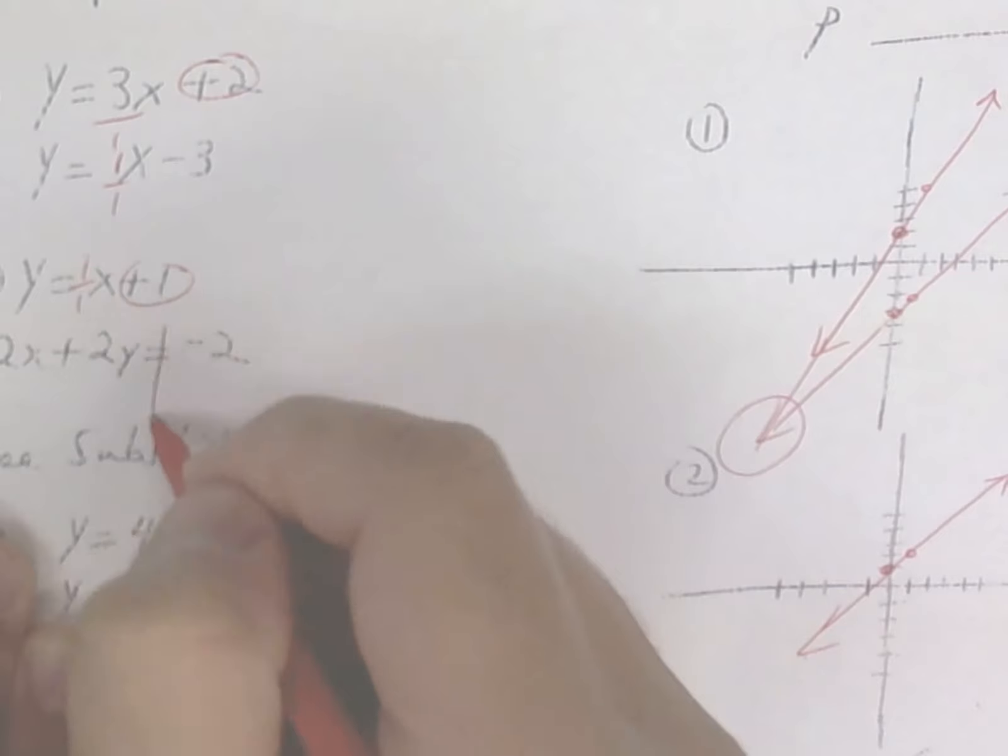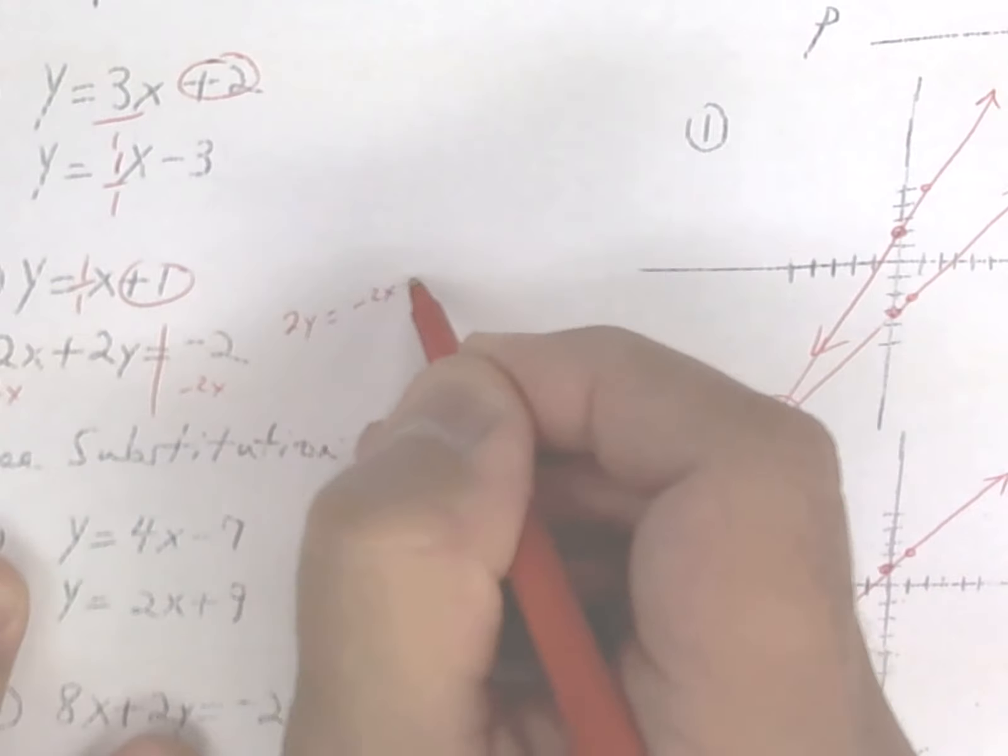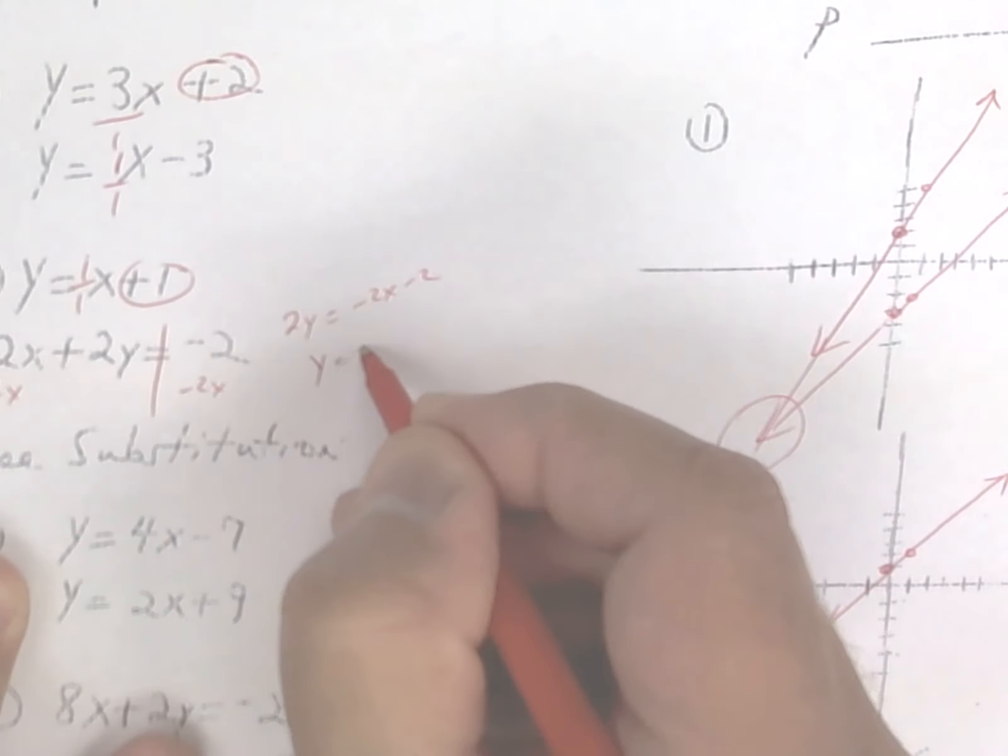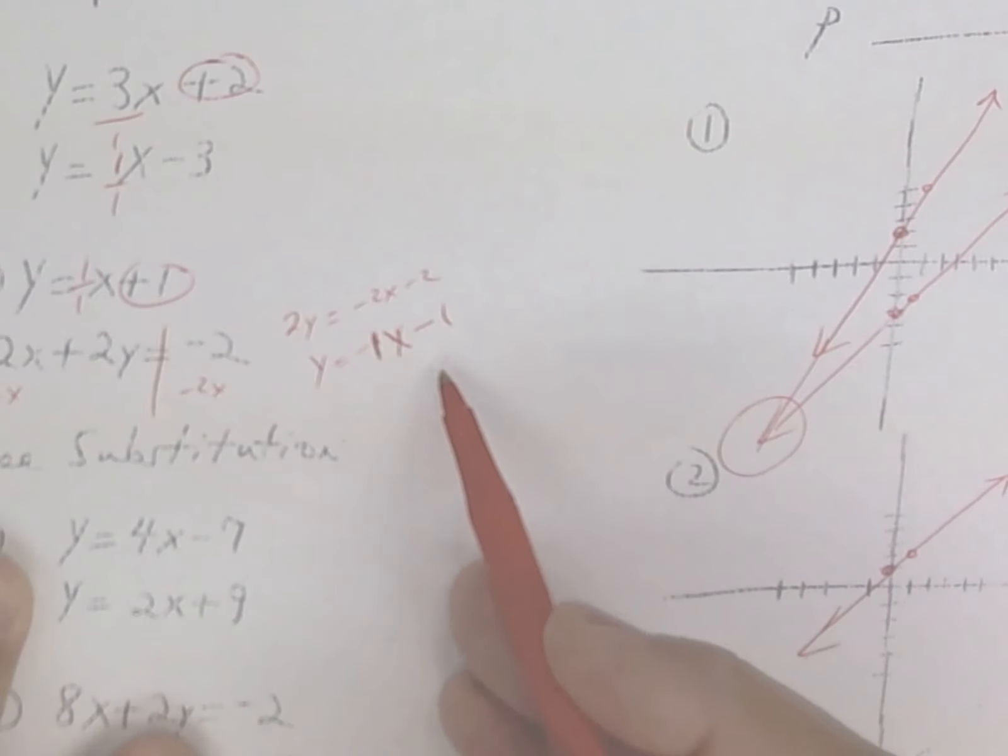The second one, you've got to get y by itself. So subtract 2x and divide by 2. So you're going to go down 1 and put a dot. Then you're going to go down 1 to the right 1. And again, where they cross is the solution.